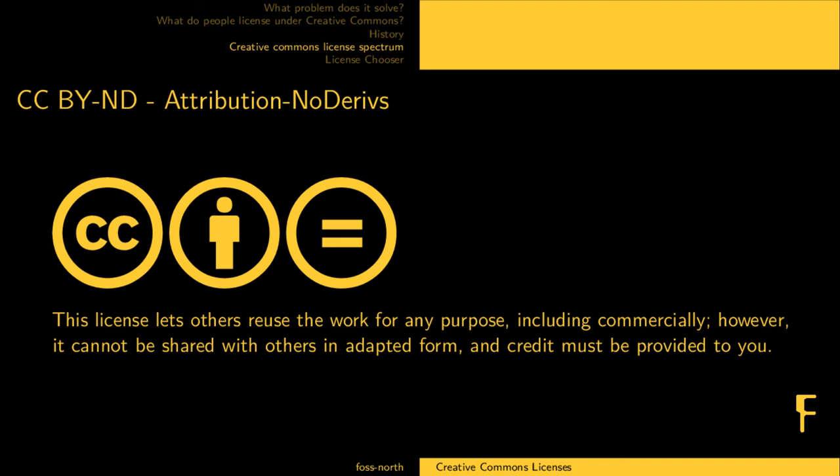Attribution No Derivatives: the license lets others reuse the work for any purpose, including commercially. However, it cannot be shared in adapted form — credit must be provided. So you can't modify it — that's what's been taken away. In software license terms, this is somewhat like freeware. There's no equivalent open source license, because that would violate the freedom to modify. You have access to the source in a way, you're just not allowed to change it.